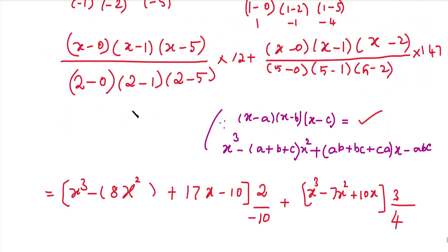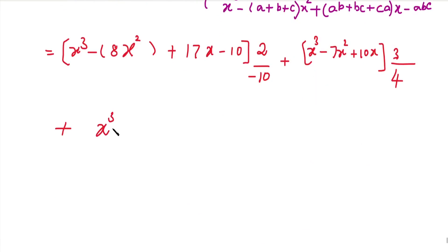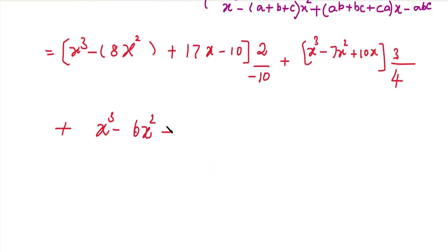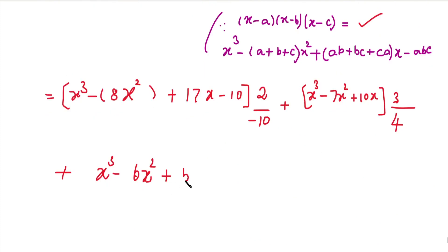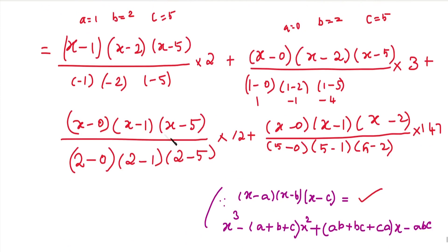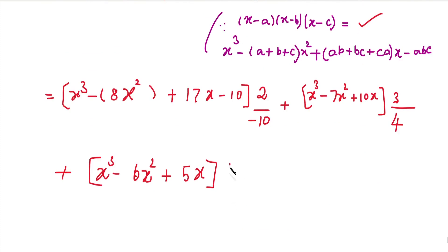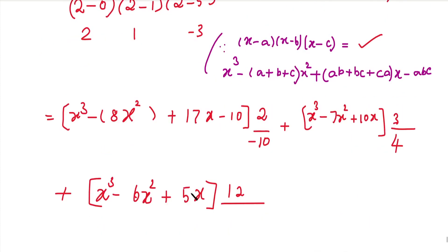For the third term, a equals 0, b equals 1, c equals 5. Expanding: x cube, minus a plus b plus c equals 6, so minus 6 x square, plus ab plus bc plus ca: 0 into 1 plus 1 into 5 plus 0 into 5 equals 5, so plus 5x, minus abc equals 0. The whole is multiplied by y2 equal to 12, divided by denominator 2 minus 0, into 2 minus 1, into 2 minus 5 equal to minus 6.